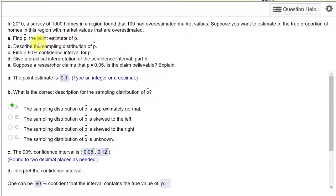First of all find P hat. P hat, the point estimate, is just the proportion there and so we take 100 divided by 1,000 and that gets 0.1 for our point estimate.